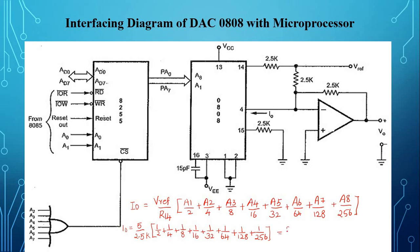The result is 2 milliamps × (255/256) = 1.992 milliamps. This shows that the full-scale output current is always 1 LSB less than the reference current source of 2 milliamps.